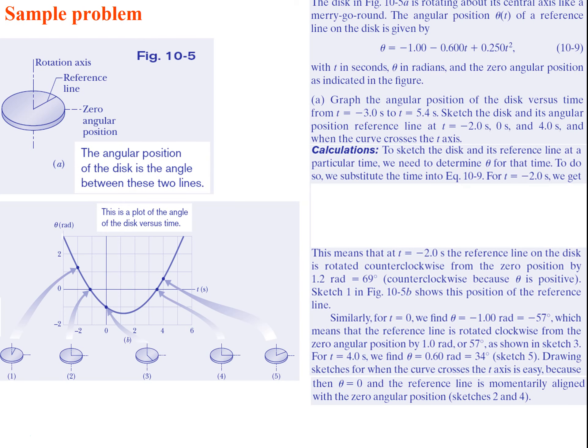Now let's do some example problems. A disc in the figure is rotating about its central axis like a merry-go-round. The angular position theta of a reference line on the disc is given by a specific equation. We want to graph the angular position versus time from t = −3 s to t = 5.4 s, sketch the disc at t = −2, 0, and 4 seconds, and at the times when the curve crosses the t-axis.